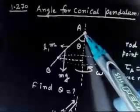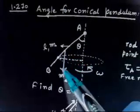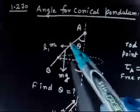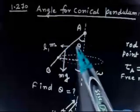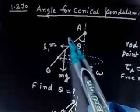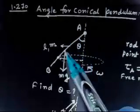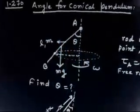This rod is in equilibrium. There are two torques: the torque due to Mg tries to rotate the rod one way, and the centrifugal force tries to rotate the rod the other way. At equilibrium these two torques have to be equal — so torque due to Mg equals torque due to centrifugal force.